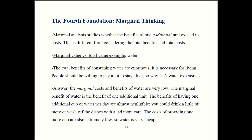Hello students. Today we are still in chapter one looking at the five foundations of economics. Our first foundation was incentives, the second one was trade-offs, and then we had opportunity costs. We talked about those in the last episodes, so now we move on to look at foundation number four, which is marginal thinking.